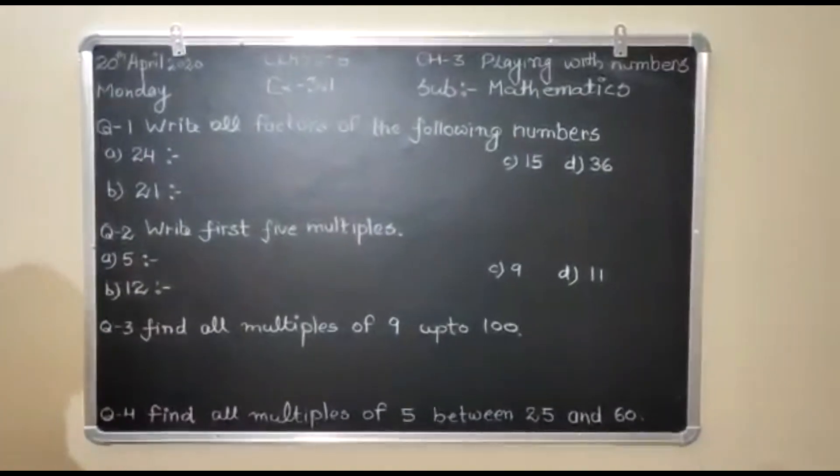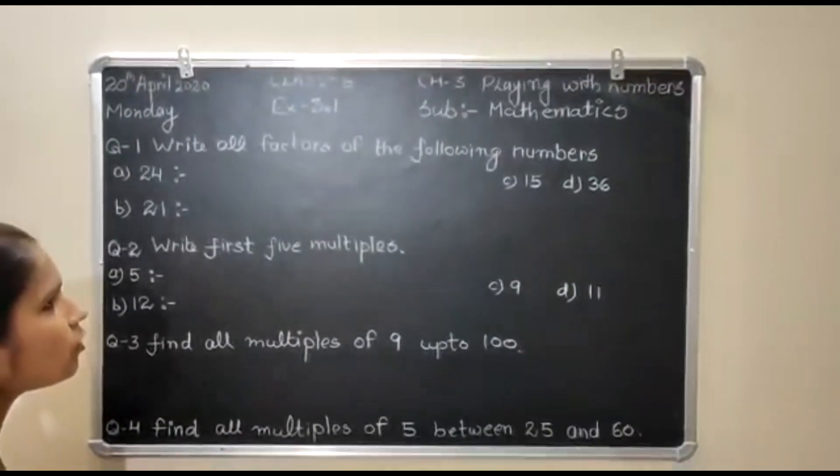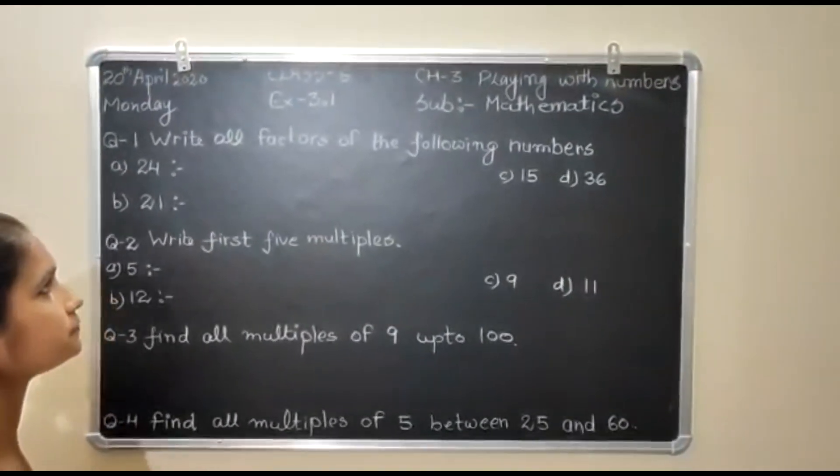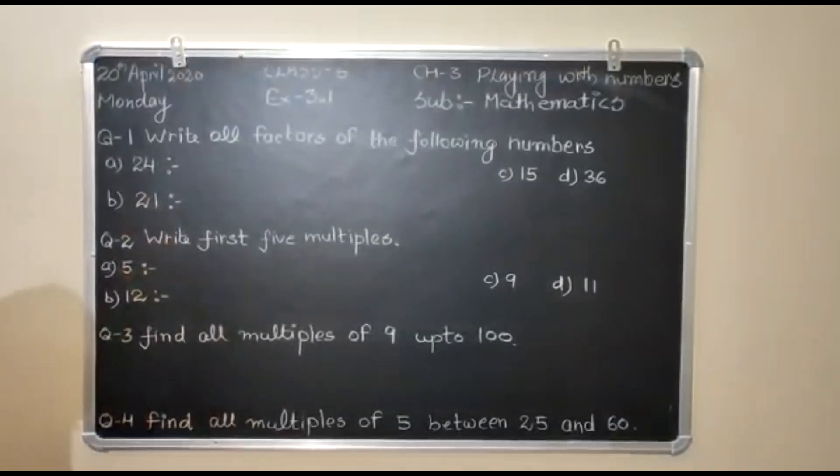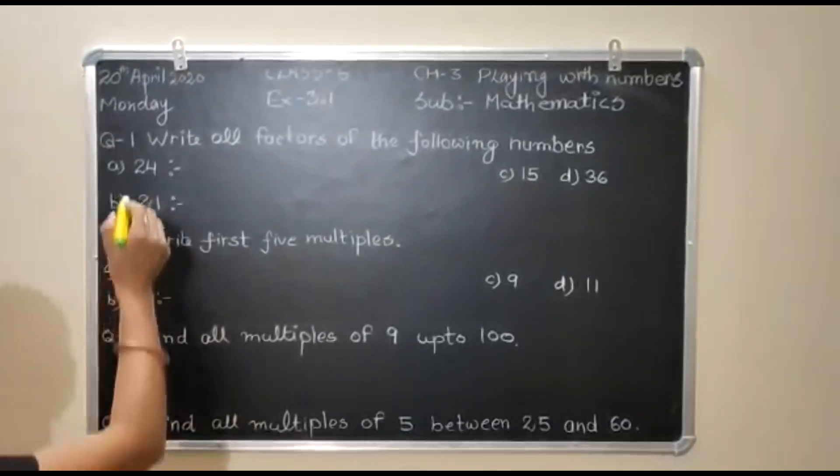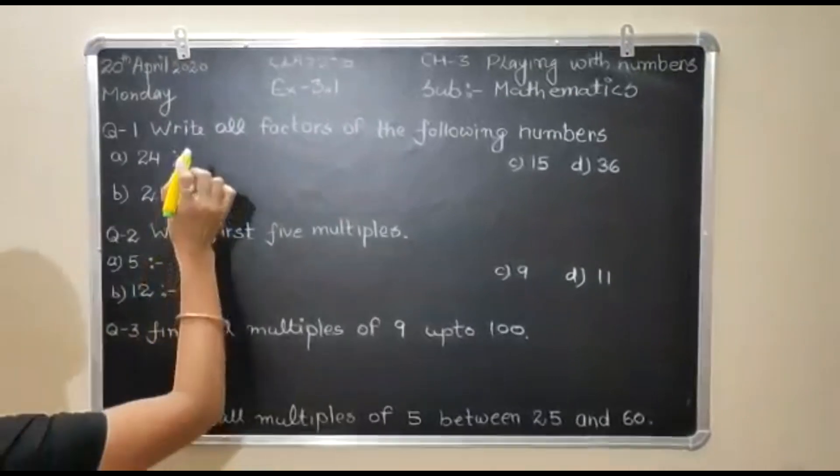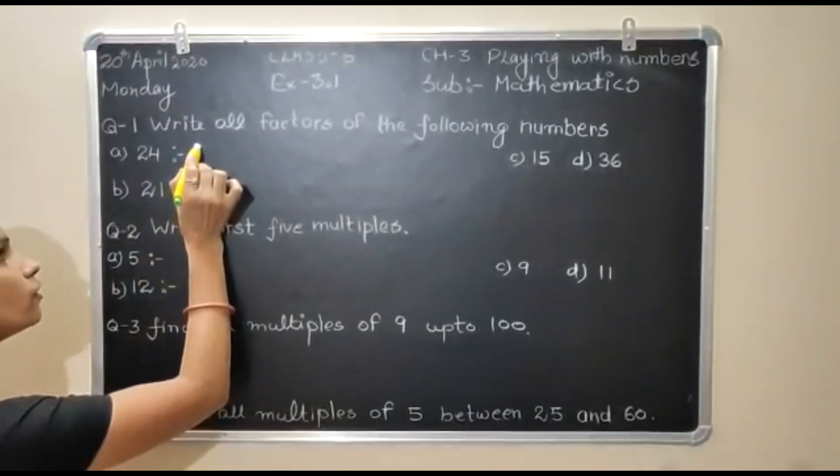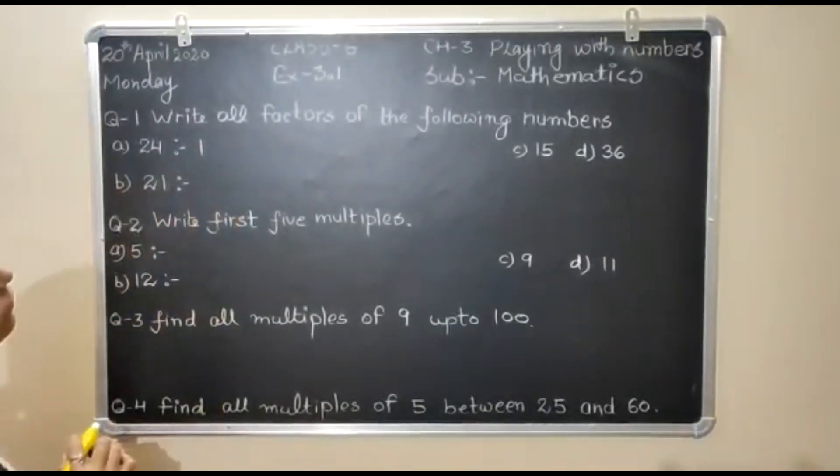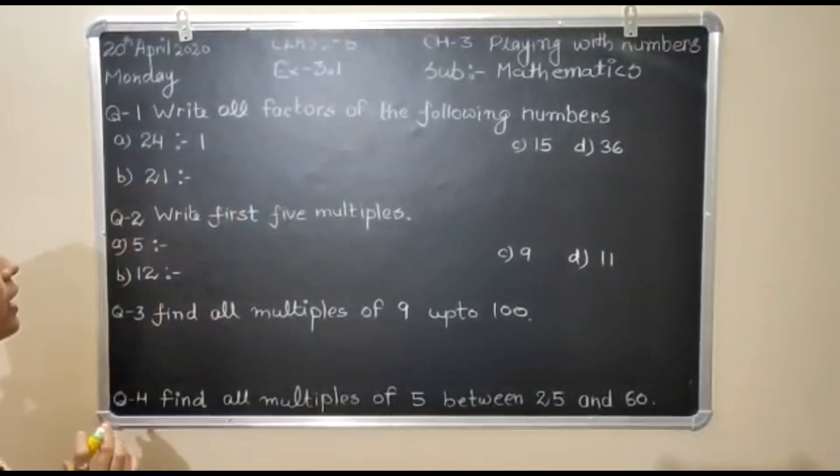Question number 1, write all factors of the following numbers. Students you have to write factors, number is 24. We start factor from 1, because 1 is the factor of every number.